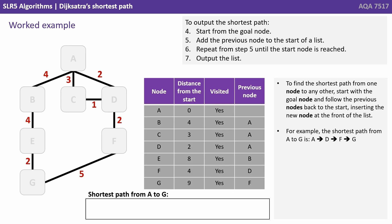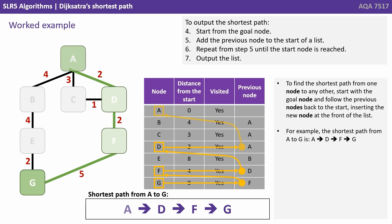To find the shortest path from one node to any other node, we start with our goal node and simply follow the previous nodes back to the start, inserting the new node at the front of the list. So for example, the shortest path from A to G would be A to D to F to G.